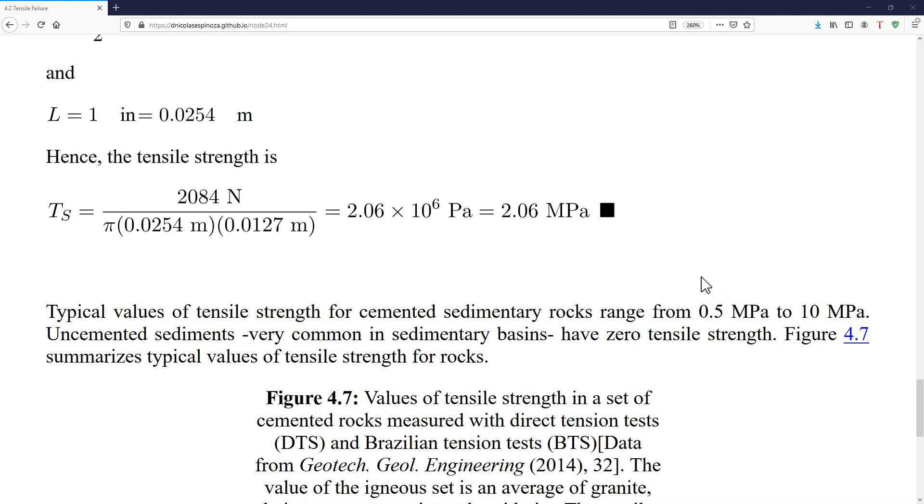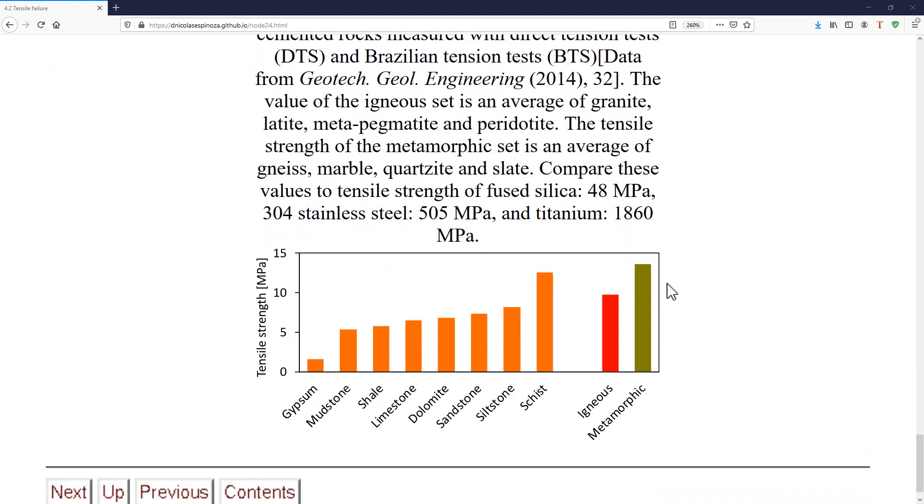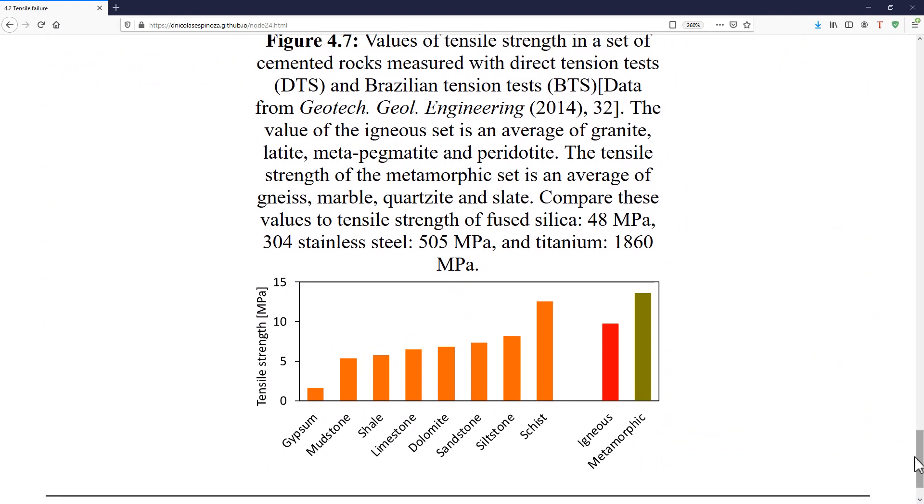From this example, we see that the tensile strength was 2 MPa, which is more or less about 280 psi. And here, just to finish, I have a plot to share with you that shows the typical tensile strength of several rocks.